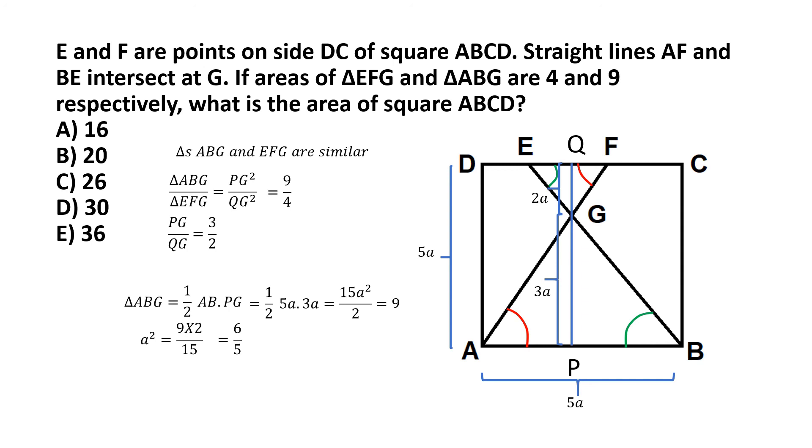Now the question comes, what's the area of the square ABCD? Well, according to our figure and the symbols that we have assumed, each side of square ABCD is 5a. So that makes the area of the square ABCD equal to (5a)², which comes to 25a². And we already know what a² is. So a² is 6 by 5.